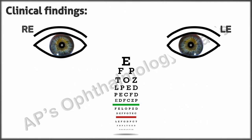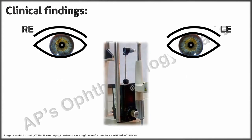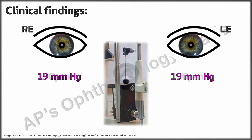On presentation her vision was 6/9 and 6/60, not improving further. At the previous visit her vision in the left eye was 6/9. Intraocular pressures measured by Goldmann applanation tonometry on topical medication were 19 mmHg bilaterally.